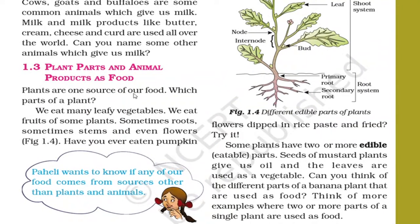Plants are one source of our food — in fact, we can say that plants are one of the most important sources of our food. But which part of the plant? We eat mainly leafy vegetables. We eat fruits of some plants, sometimes roots, sometimes stems, and even flowers.